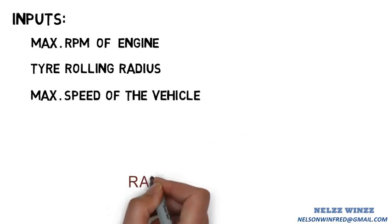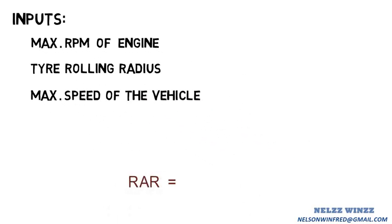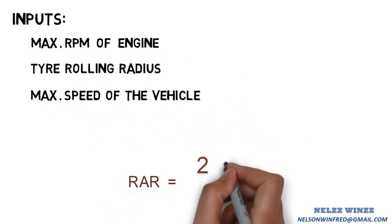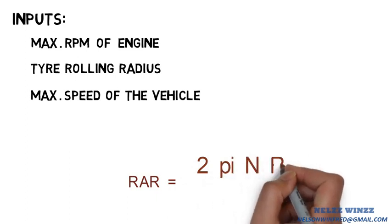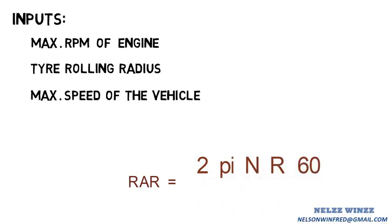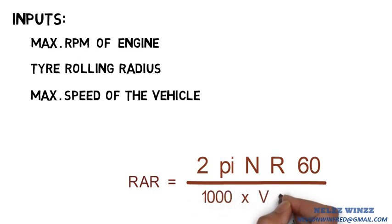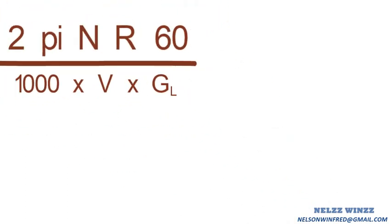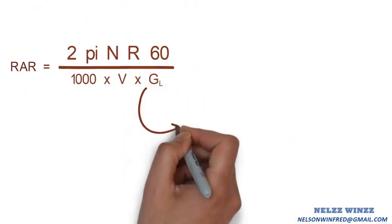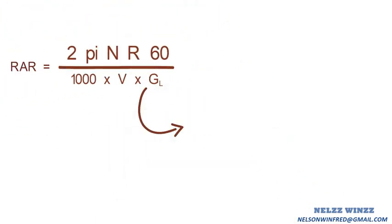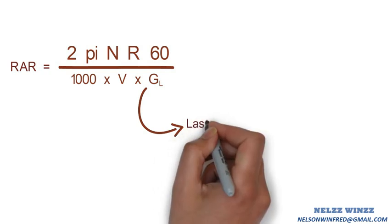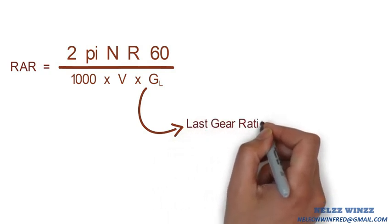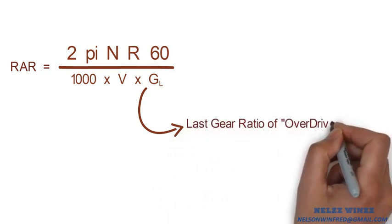The formula for rear axle ratio is: 2π × n × R × 60, divided by 1000 × V × G. Here, GL means the last gear ratio of the overdrive gearbox.